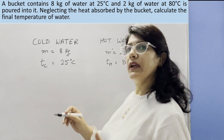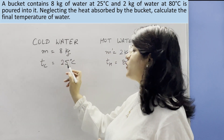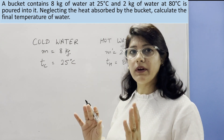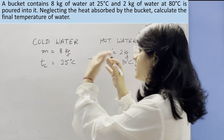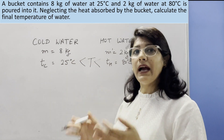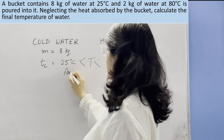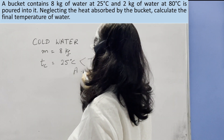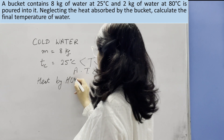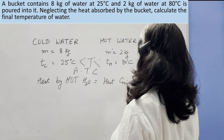Now let us solve a few numericals. In the first numerical, the mass of cold water is 8 kg and the mass of hot water is 2 kg. The temperature of cold water is 25°C and the temperature of hot water is 80°C. We need to calculate the final temperature, which lies between 25°C and 80°C — it can never be more than 80 or less than 25. According to the principle of calorimetry, heat energy lost by hot water equals heat gained by cold water.